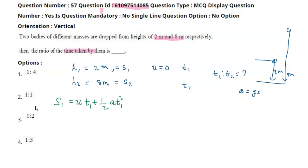For the first body, s1 equals u times t1 plus half a times t1 squared. Since u equals 0, we have s1 equals half g t1 squared. So 2 equals half g t1 squared, which gives t1 squared equals 4 by g. This is equation 1.